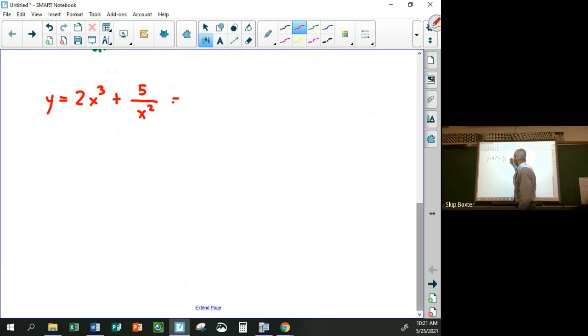I could rewrite this as powers. This would be 2x cubed plus 5x to the negative 2. And then I could just do this as many times as I wanted to. Like the first derivative, y prime, would be 6x squared minus 10x to the negative 3.